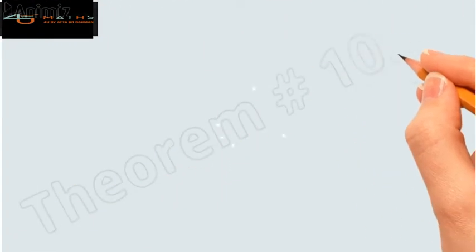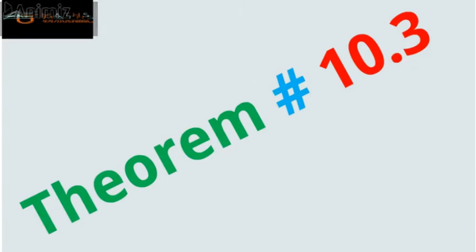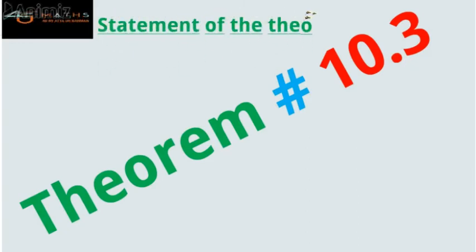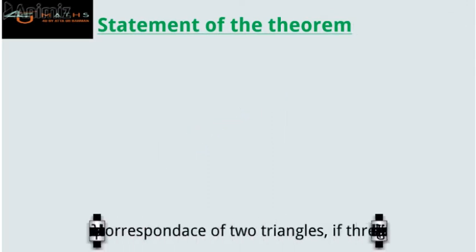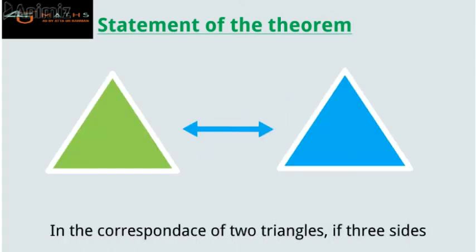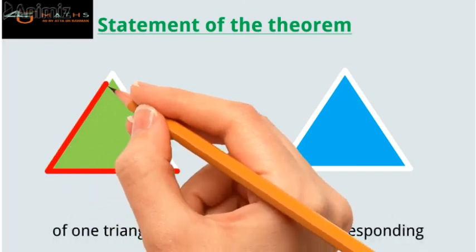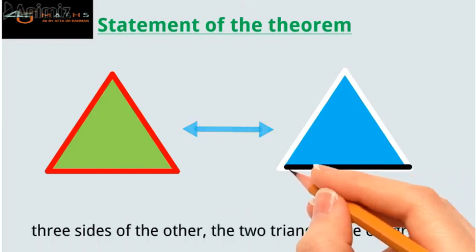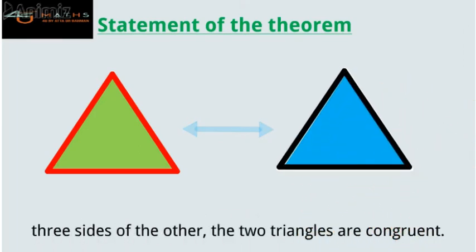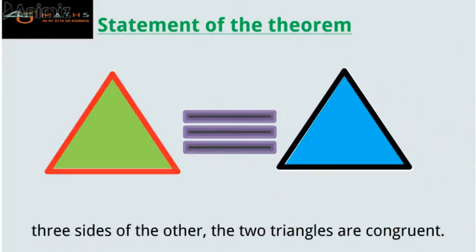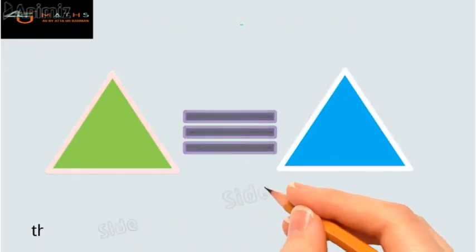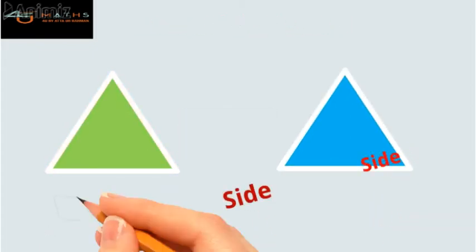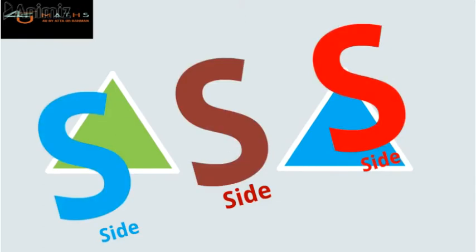Theorem 10.3 — Statement of the Theorem. In the correspondence of two triangles, if three sides of one triangle are congruent to the corresponding three sides of the other, the two triangles are congruent. One can remember this theorem as the SSS Congruence Theorem with ease.